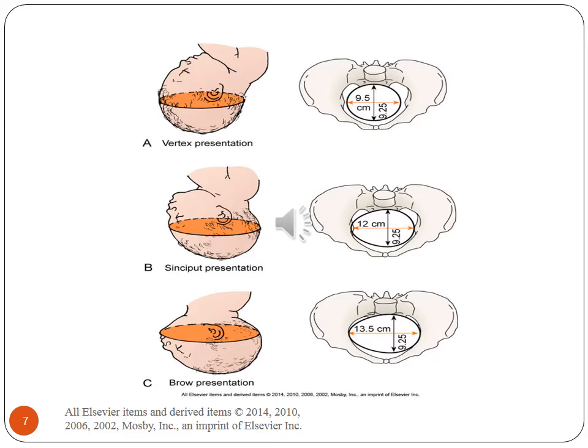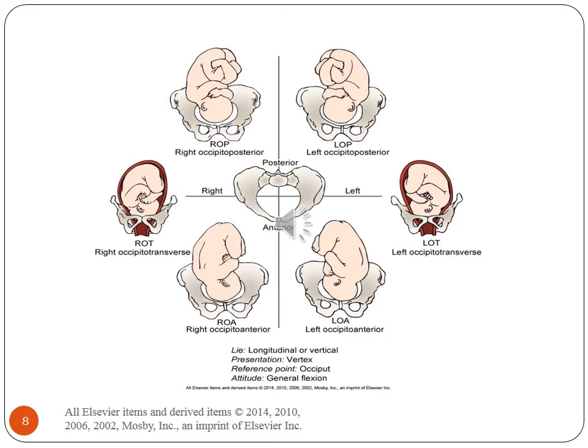This diagram depicts vertex presentation, sinciput presentation, and brow presentation. This picture depicts different fetal presentations: ROT, LOT, ROA, LOA — different occipital positions that the baby may be presenting in. You can read more about this in your textbook, page 343.